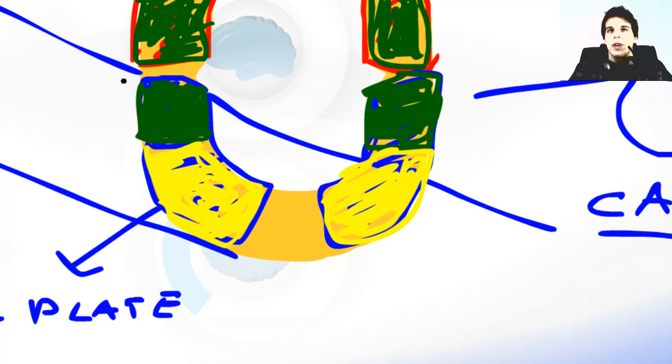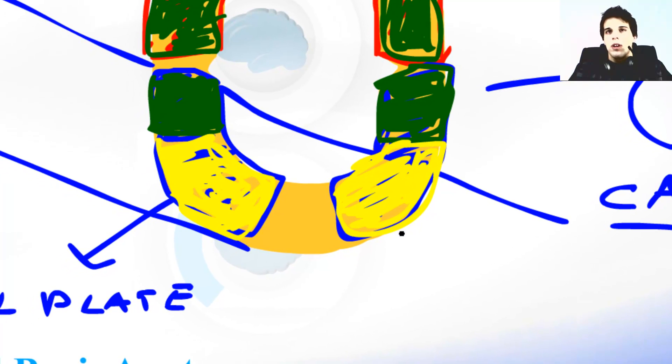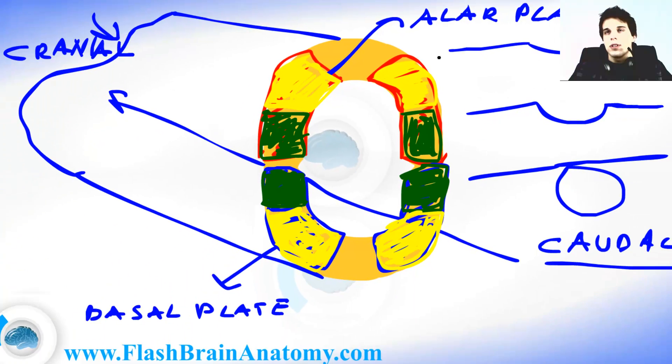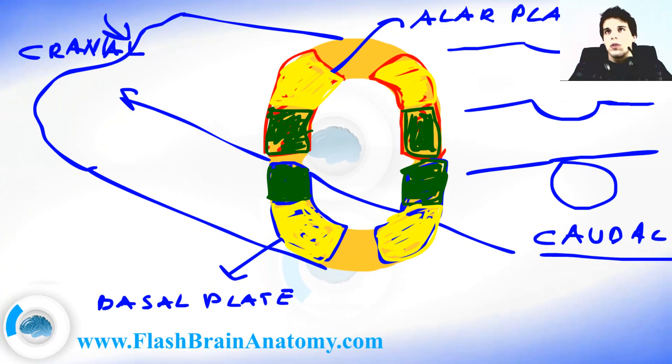So we have this part over here called the basal plate which is important for the motor functions, and we have this part over here, the alar plate, which is important for the sensory functions. The alar plate is on the dorsal side and the basal plate is on the ventral side.